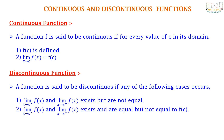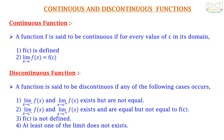Second, the limit as x tends to c exists but does not equal f(c). Third, f(c) is not defined — we saw this case in the example y = (x² - 1)/(x - 1). And fourth, at least one of the limits does not exist, that is, the left-hand limit or right-hand limit does not exist.